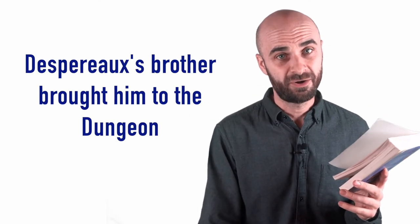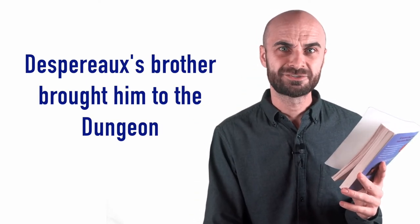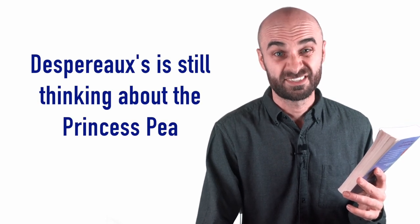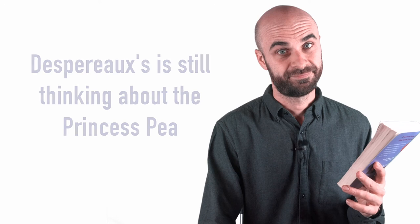That's the end of the chapter. Who was one of the mice that was leading Despero to the dungeon? Yeah, it was his brother, Furlough. That word perfidy meant not trustworthy. Who was not trustworthy in this last chapter? Yeah, Despero's brother. Despero even asked him, would you let me go, and what did his brother say? Nope. Who else is he thinking about as he goes down into the dungeon? He's still thinking about the Princess Pea. I wonder if he'll still be brave when he gets to the dungeon. All right, let's keep going.